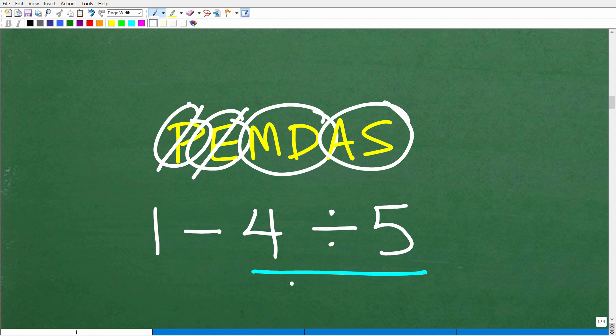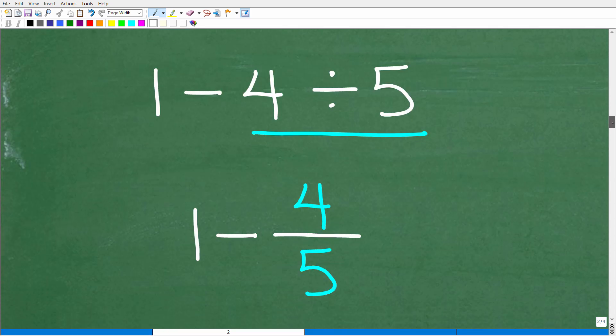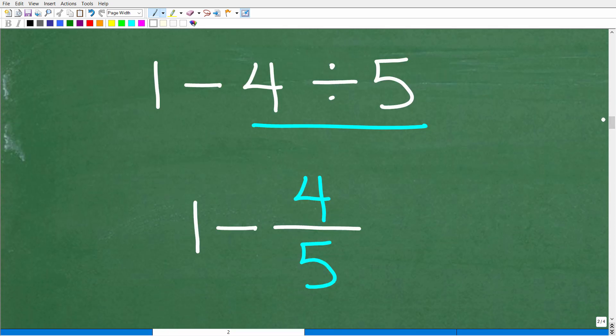Now, this problem, what you don't want to do is take 4 and divide it by 5 and try to actually come up with a decimal value. Okay. What we want to do here is think of this as a fraction. So, 1 minus, now your brain is going to focus in over here on the 4 divided by 5. And 4 divided by 5 is the same thing as 4 fifths. All right. So, 1 minus 4 divided by 5 is the equivalent problem here is 1 minus 4 fifths.